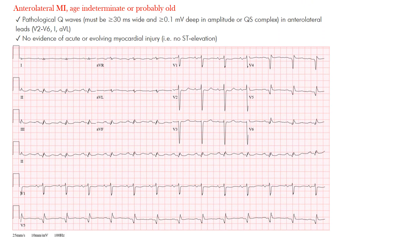So anterolateral MI, age-indeterminate or probably old — this is what we're going to look at today. We want to see localized findings to the anterolateral leads, which we consider V2 through V6, as well as leads I and aVL — the lateral limb leads.